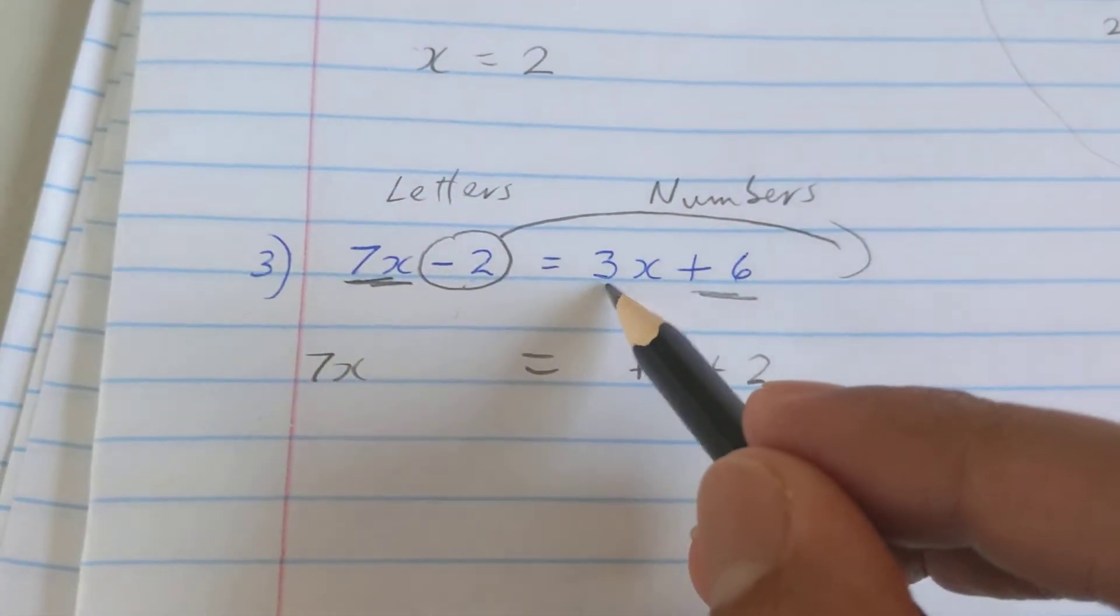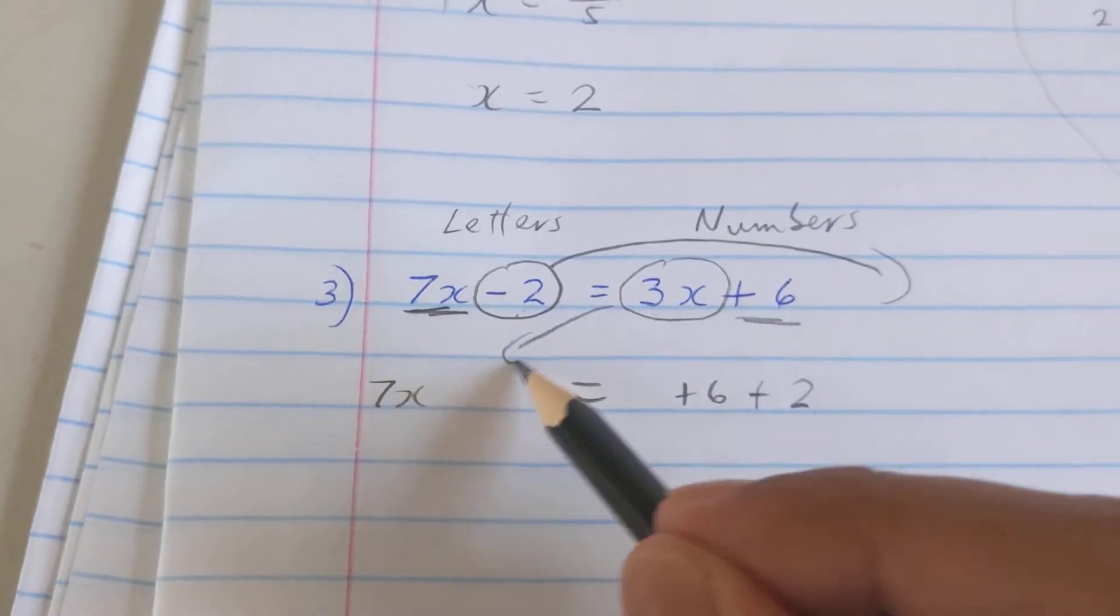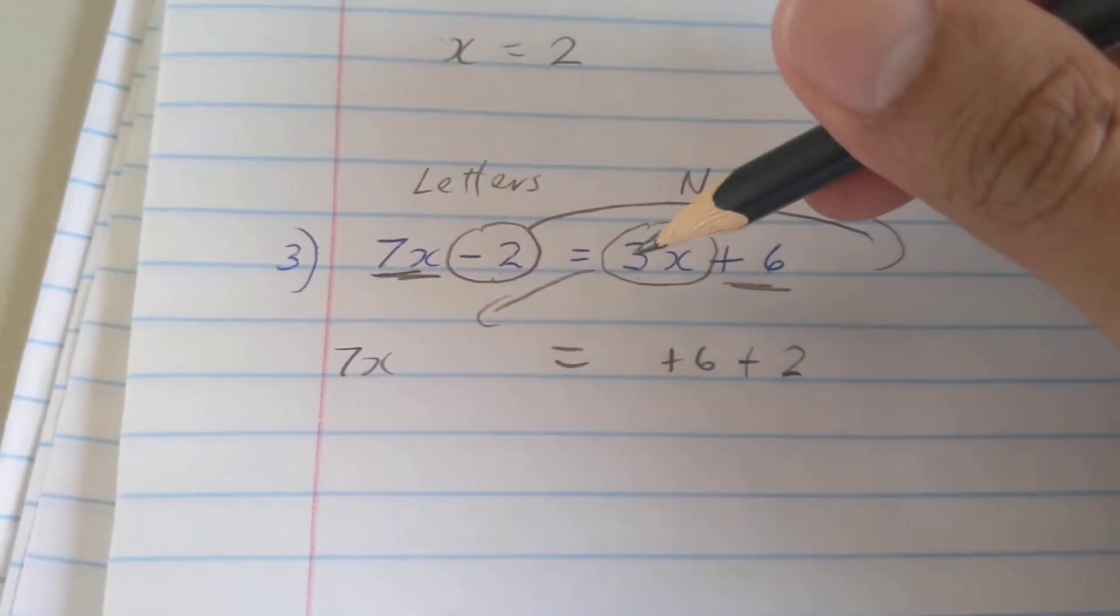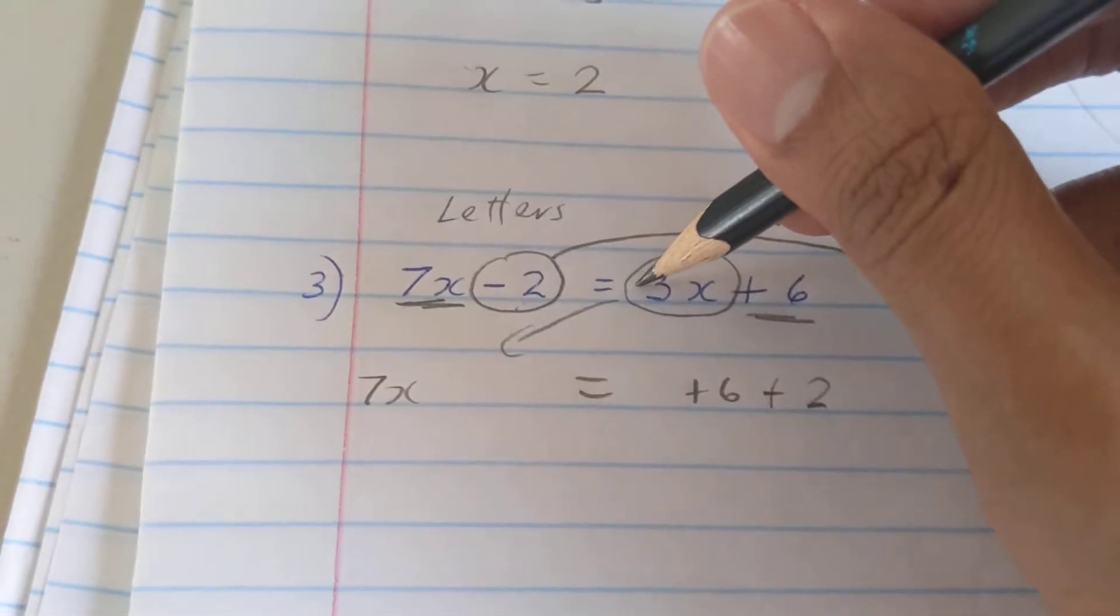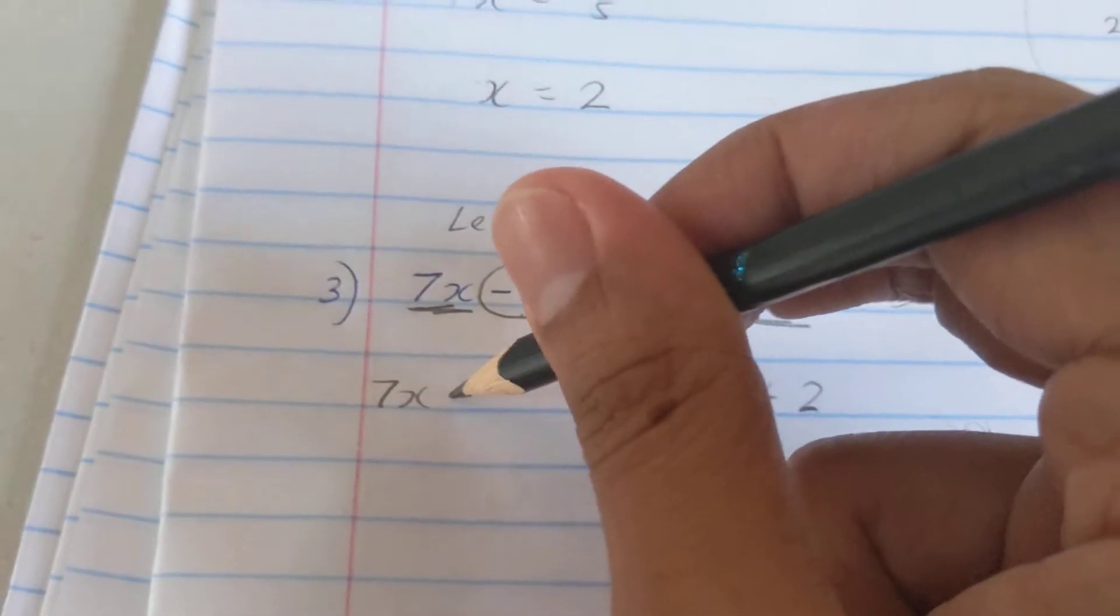Same thing on this side. He's a letter, he shouldn't be on the side with the numbers, so he needs to move to this side. But even though I'm not seeing a sign on it, if you don't see a sign on something, it's understood that it's positive. So when I move plus 3x to this side, once it moves, its sign gonna change.